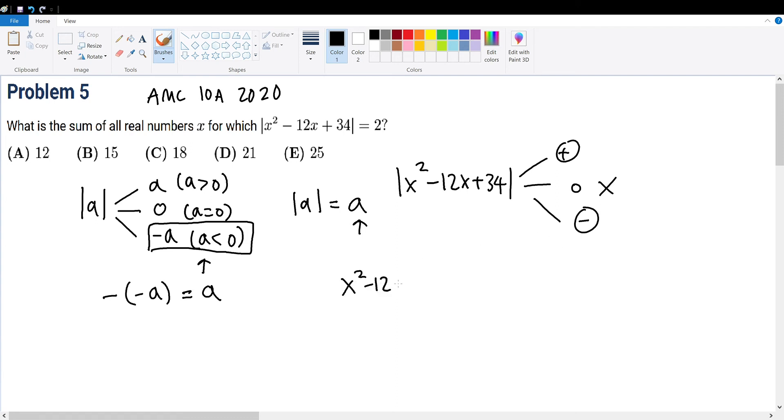So x squared minus 12x plus 34, when it's greater than 0, must equal positive 2. And x squared minus 12x plus 34, when it's less than 0, must give negative 2. We can subtract 2 on both sides to get x squared minus 12x plus 32 equals 0. Add 2 on both sides to get x squared minus 12x plus 36 equals 0.